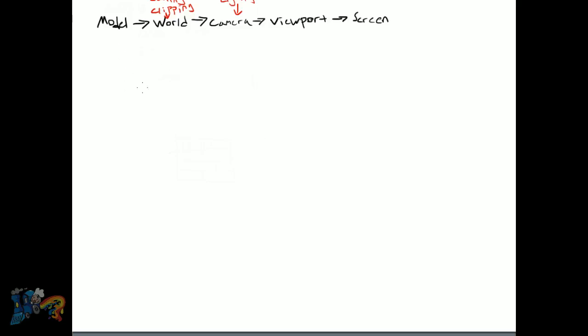Some of this will start to make sense as we define each space. So let's jump in and talk about model space. Here's model space. This is the first stage. Let's take an object, let's define a model of a square. Model space can be thought of as an object with respect to its own universe.